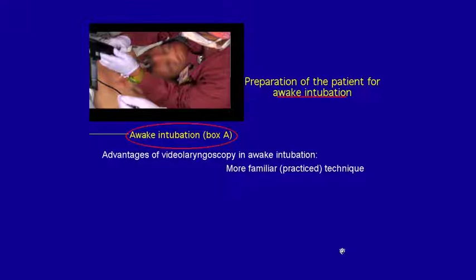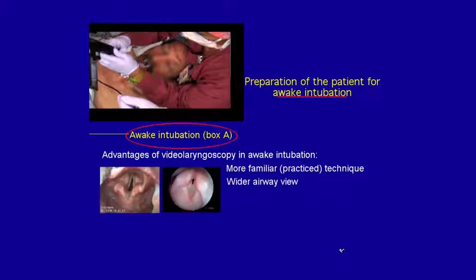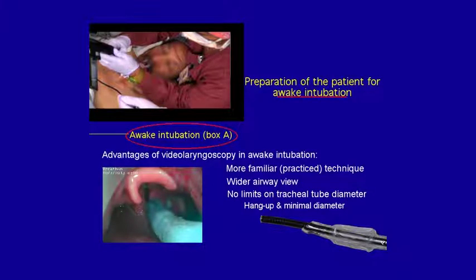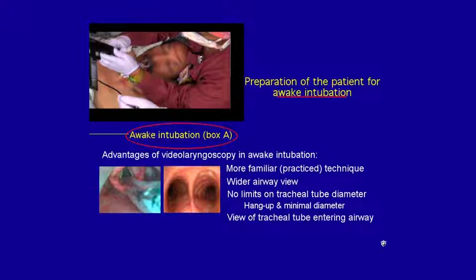The advantage of video laryngoscopy for awake intubation is that it tends to be a more familiar technique — you can practice it every day in the operating room. It gives you a wider view compared to the narrow view through a flexible scope. You don't have the problem of hang-up from a mismatch between the flexible scope diameter and the internal diameter of your tracheal tube. And with a video laryngoscope, you actually see the tracheal tube pass into the larynx — another advantage.